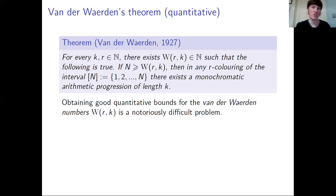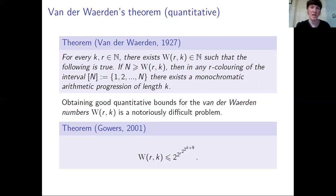A notoriously difficult problem in arithmetic Ramsey theory is to find good bounds for these van der Waerden numbers W(r,k) — how large do they have to be in terms of r and k? It took around 60 years before it was proven in 1988 by Shelah that one can even obtain reasonable bounds on these quantities. Shelah proved that these numbers are primitive recursive. The best bounds we currently have for general r and k are due to Gowers, who proved that W(r,k) is at most 2 to the 2 to the r to the 2 to the 2 to the k plus 9.